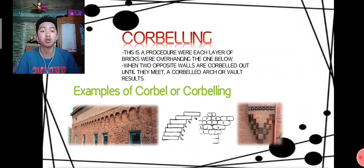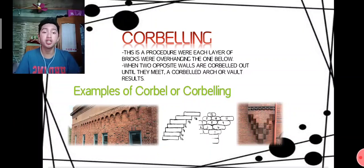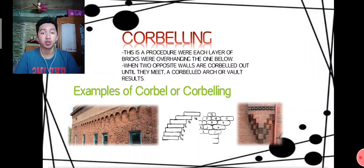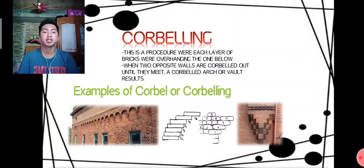Next is corbelling. This is a procedure where each layer of bricks overhangs the one below. When two opposite walls are corbelled out until they meet, a corbelled arc or vault results.